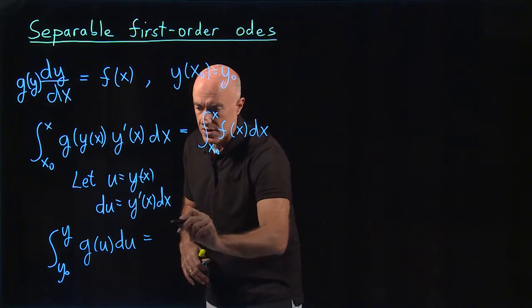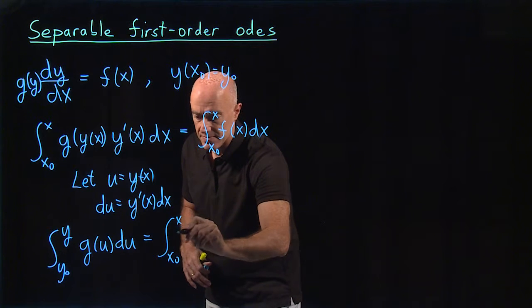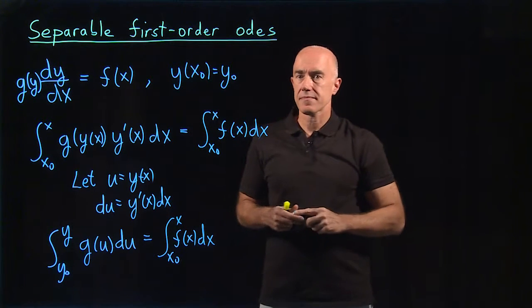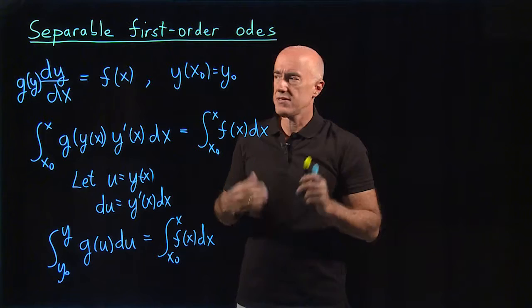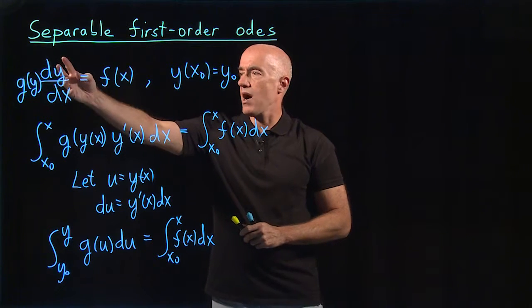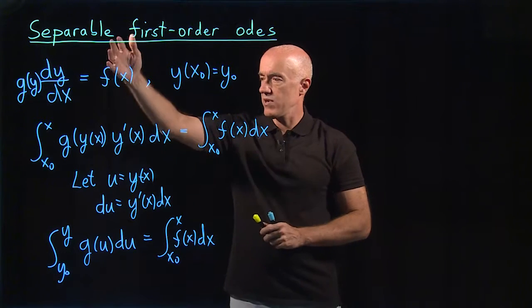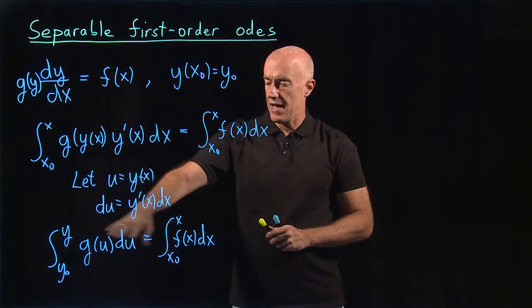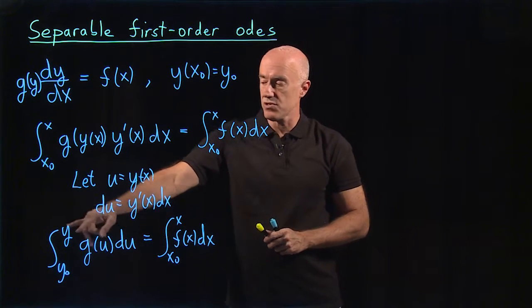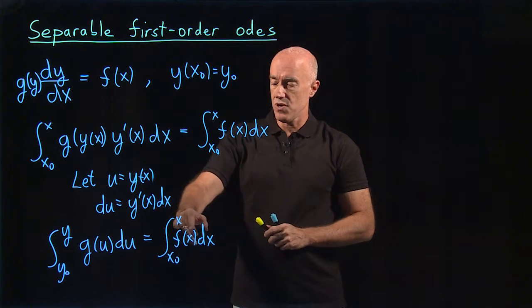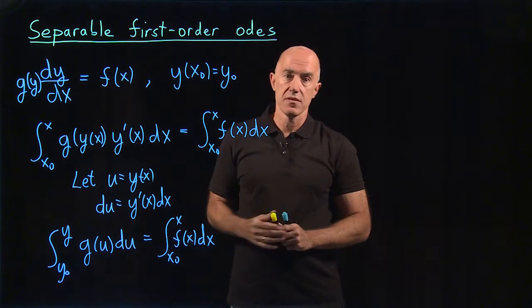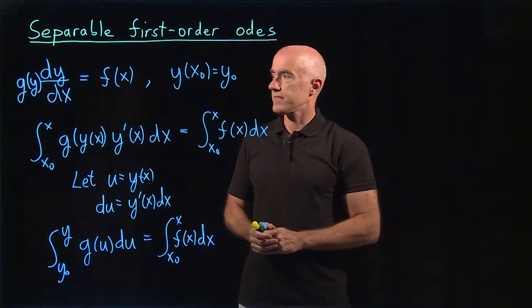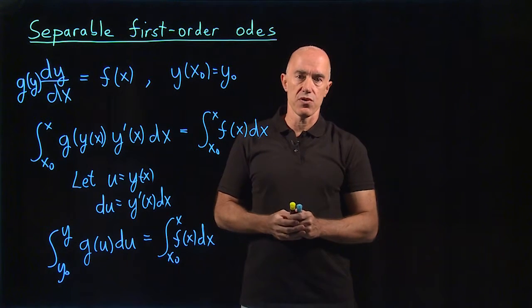And that's equal to the integral from x naught to x f of x dx. So the first-order equation that's separable, written in the form g of y dy/dx equals f of x, we can simply integrate and end up with a solution that means that you have an integral to do on the left and integral to do on the right. And then in many cases, you can then solve this equation for y as a function of x. That's the separable first-order equation.